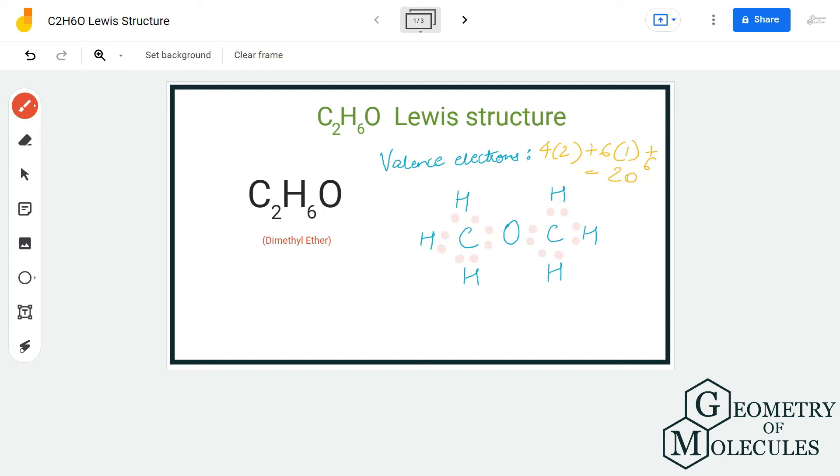So these 4 valence electrons can be placed around the oxygen atom, and doing that we will have a complete octet for oxygen atom as well.